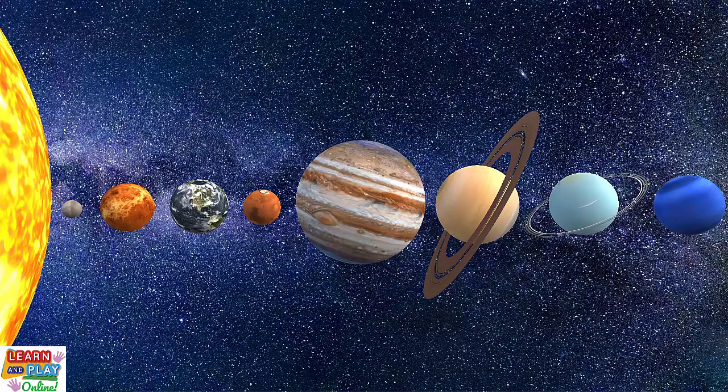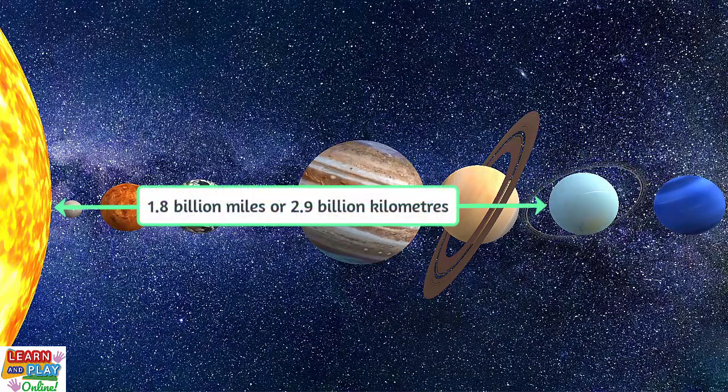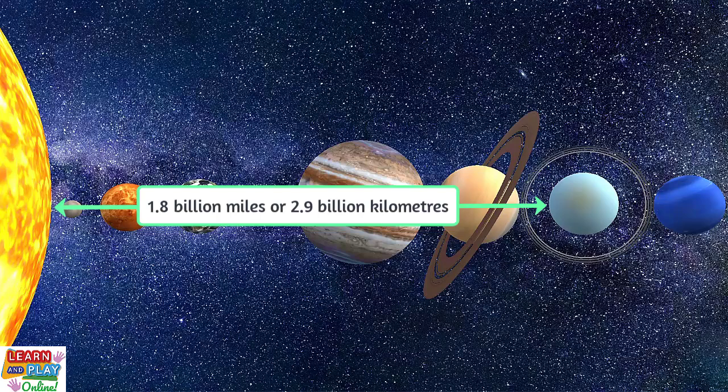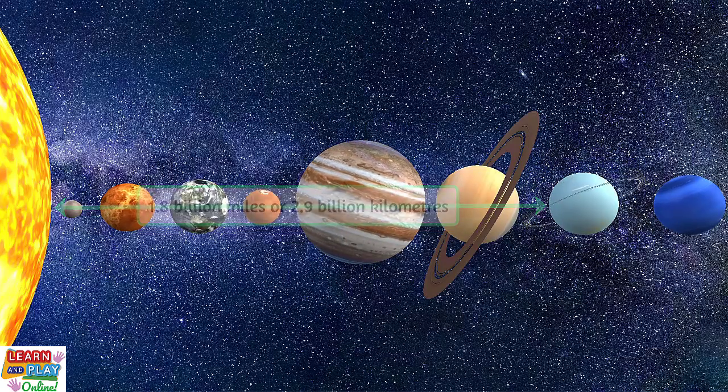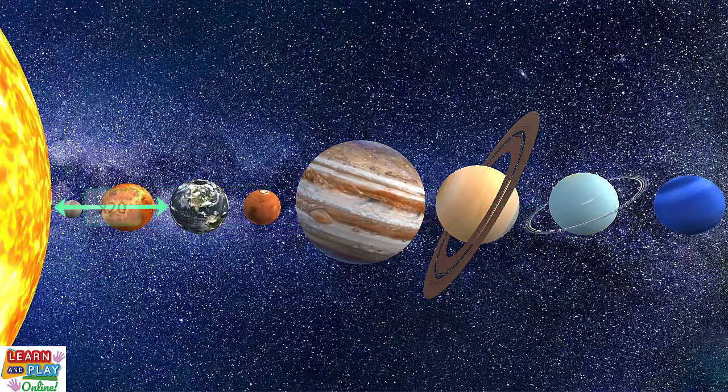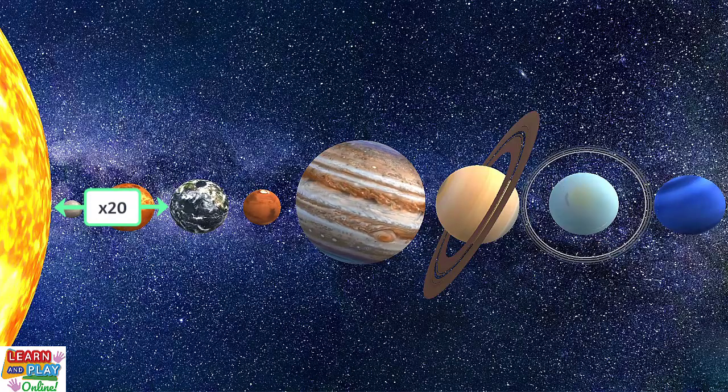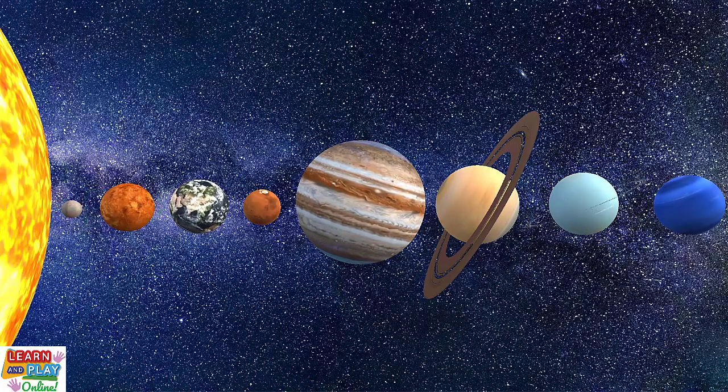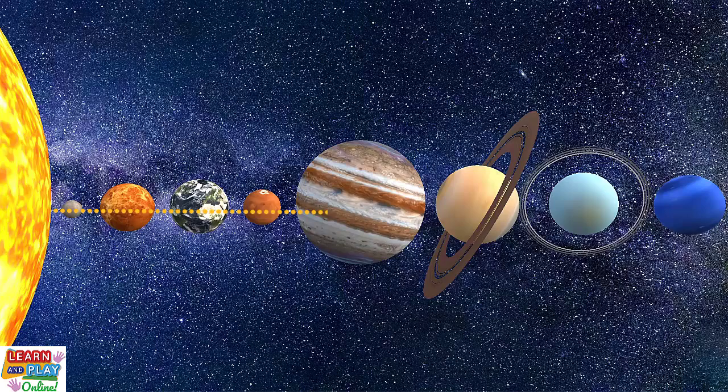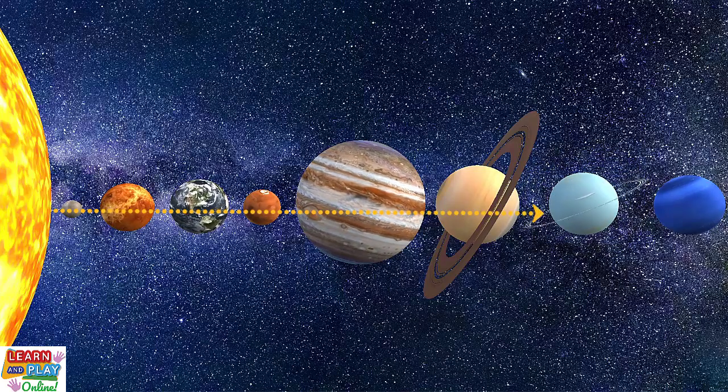Uranus is around 1.8 billion miles, or 2.9 billion kilometers, from the sun. This means that Uranus is about 20 times further from the sun than Earth, and because it is so far from the sun, it takes sunlight 2 hours and 40 minutes just to reach Uranus.